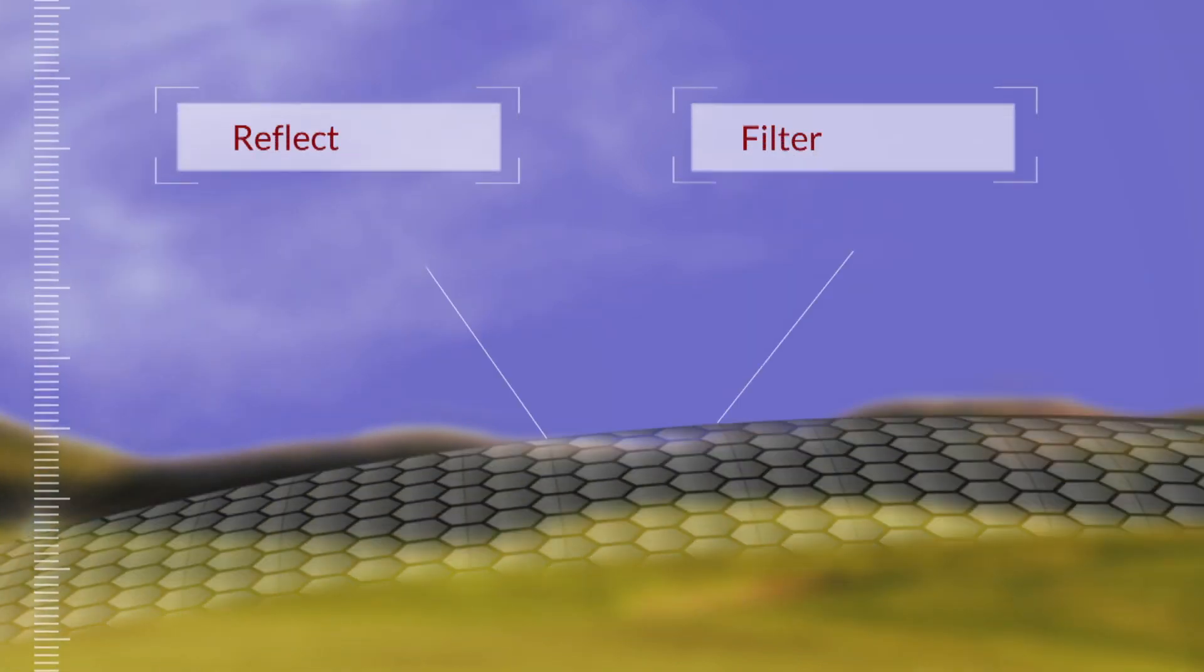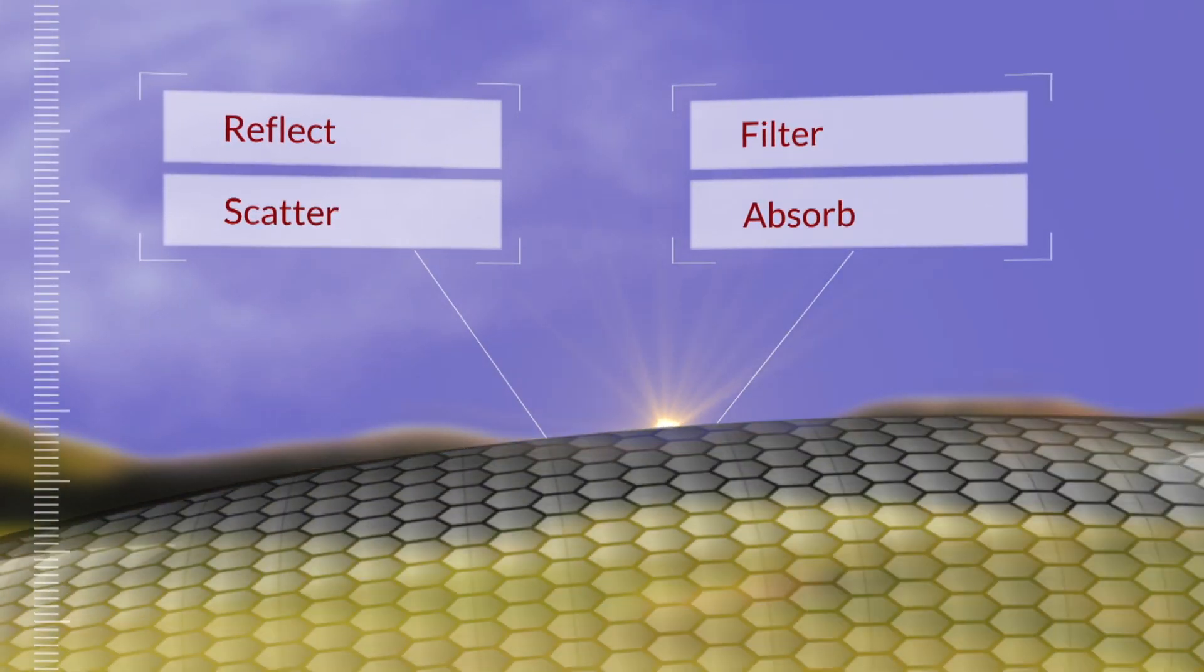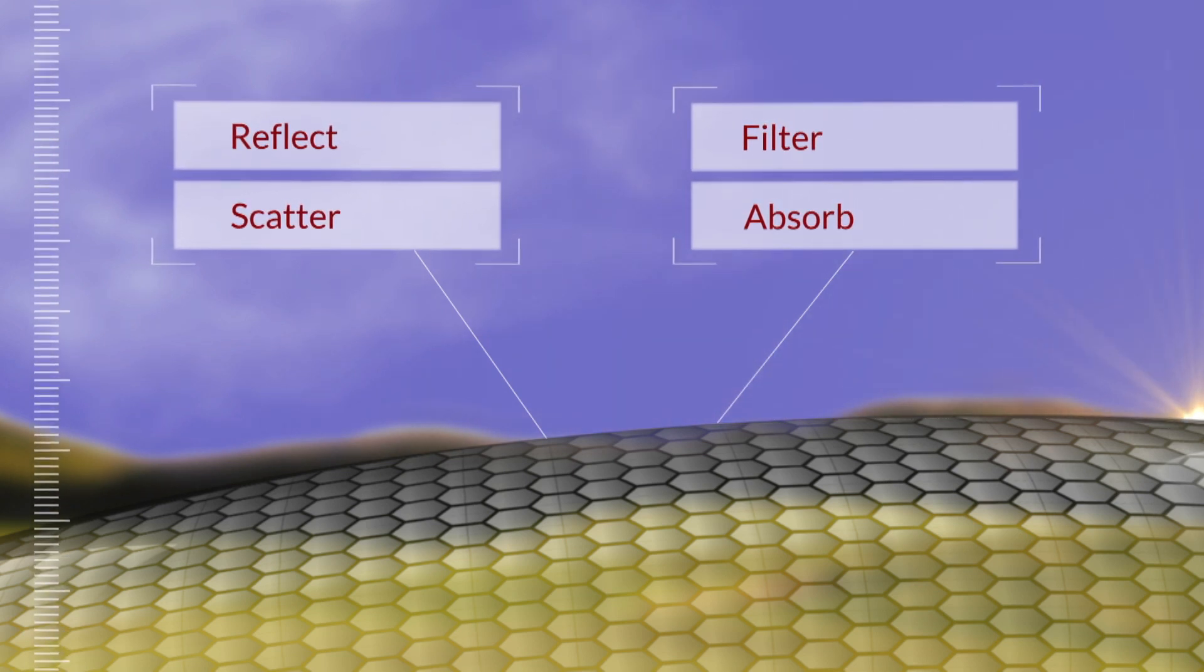These two natural ingredients reflect, scatter, filter, and absorb solar radiation and provide other useful benefits for healthy turf.